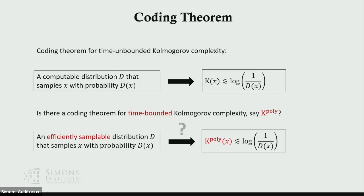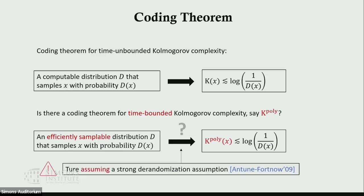The question here is whether there's a coding theorem for time-bounded Kolmogorov complexity, say k-poly. If we have an efficiently sampled distribution D that samples x with probability D(x), can we say that the k-poly complexity of x is at most log 1 over D(x)? In fact, Antunes and Fortnow showed that this is true if we assume a strong derandomization assumption, but this result is conditional.